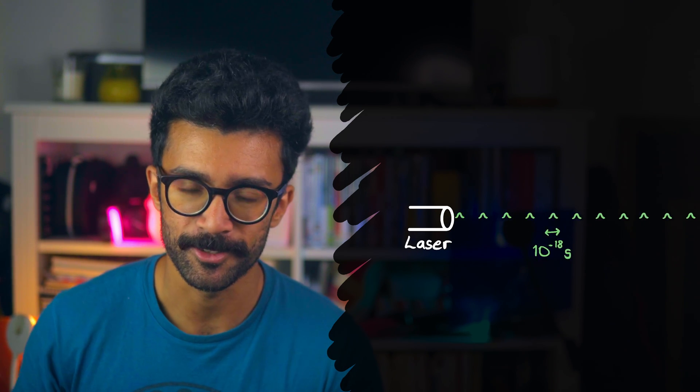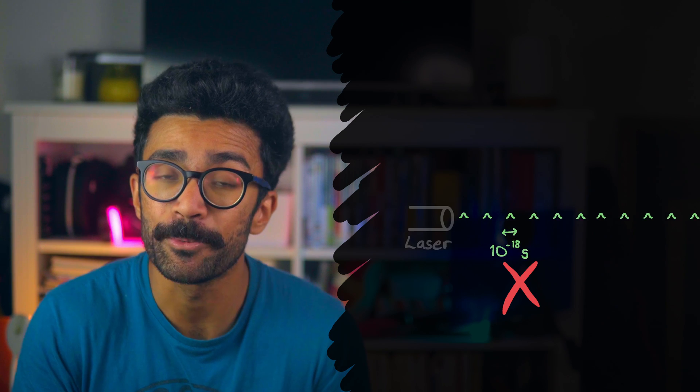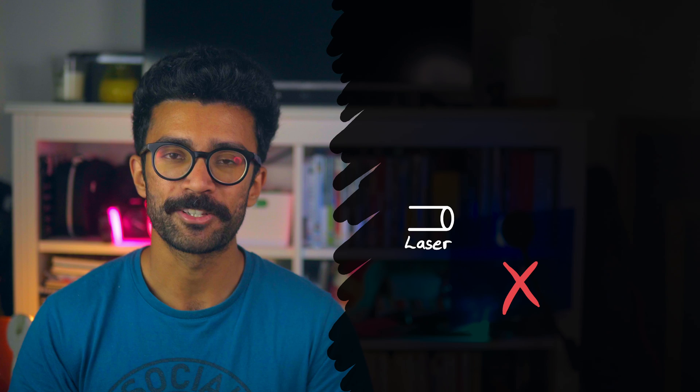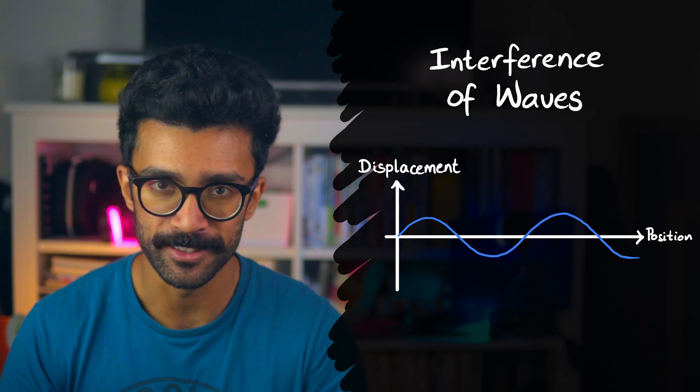These three scientists have all done important work in being able to create what are essentially very, very short pulses of laser light on the order of attoseconds or 10 to the power of minus 18 seconds. You can't just create them by switching the laser on and off very quickly, because physically we can't do that fast enough. Instead, a really clever technique based on the interference of waves is used.